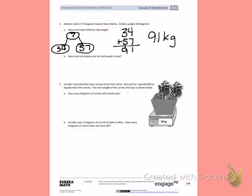Part B. How much do Andrea and her dad weigh in total? So again, we want the total. That means we're missing the total. Andrea weighs 34 kilograms. We just found out how much her dad weighs, 91 kilograms. Use this picture to help you solve part B.